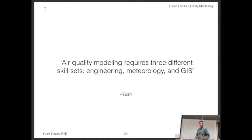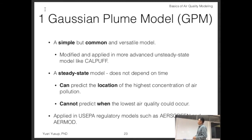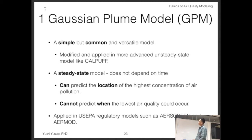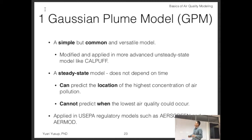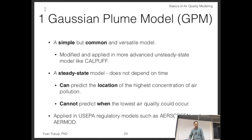The Gaussian plume model is a simple, common, and versatile model. It's simple because you can use it by hand — just look at the equation, plug in the values, and calculate the air pollution concentration. It is the most common model, applied as the foundation of many different, more advanced models. It's versatile because you can apply it almost anywhere, and in its simplest form it can be used by hand. It is also modified and applied in more advanced unsteady-state models like CALPUFF.